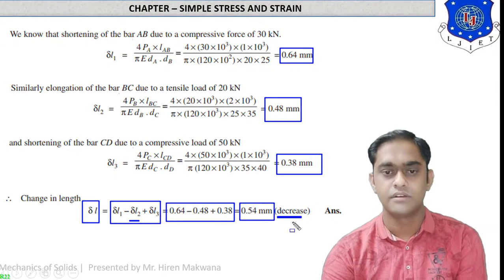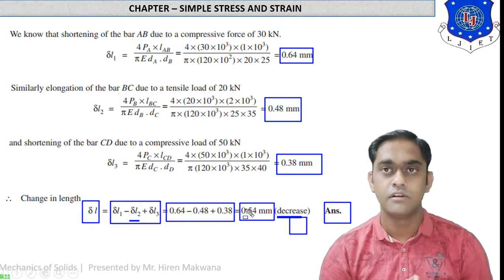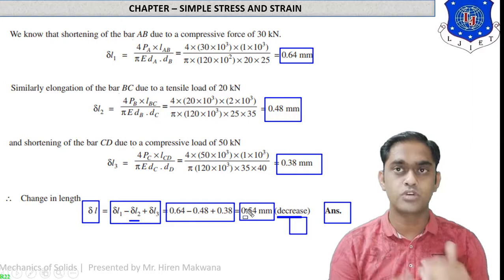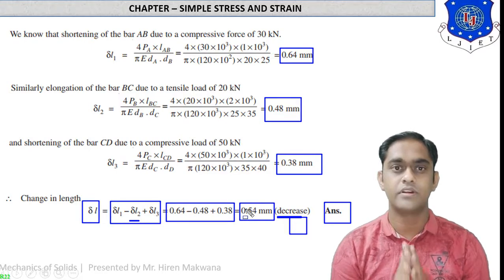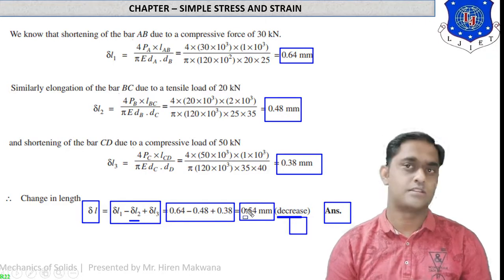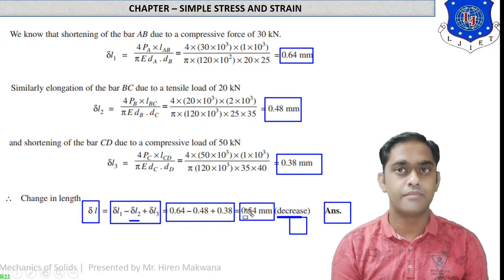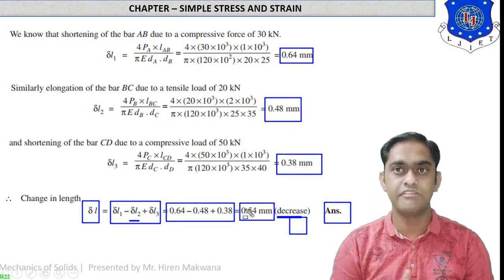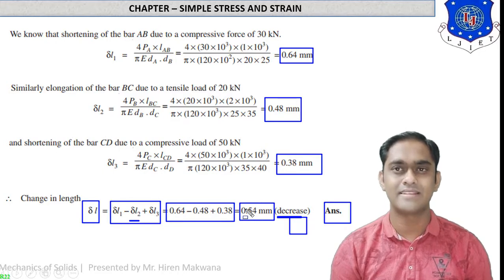The second part has compressive force from both sides, so its length decreases. Total delta L = delta L1 minus delta L2 plus delta L3 = 0.64 minus 0.48 plus 0.38 = 0.54 mm. This is the change in length. This portion of the chapter is very tough — revise the theory repeatedly and practice the numericals. The theory carries more weightage in the GTU exam. Thank you and we will meet in the next lecture.